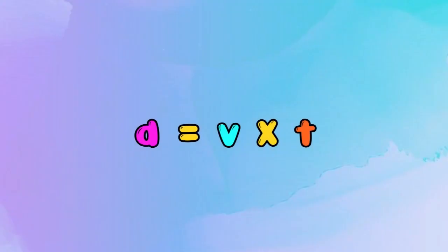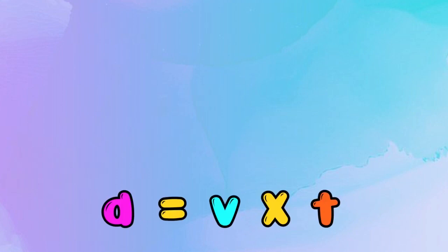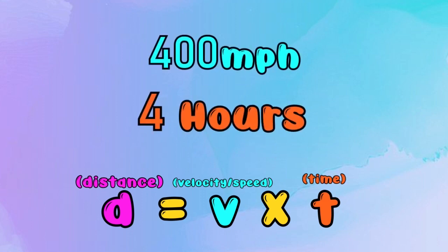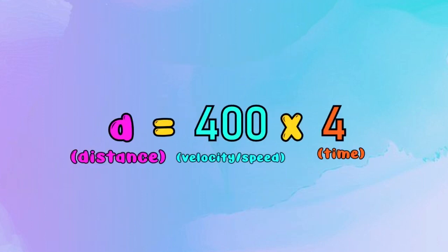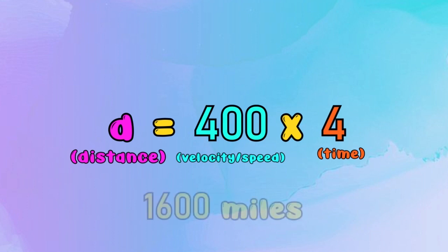Now, we will substitute D equals V times T. That is distance equals velocity or speed, multiplied by time. We substitute D equals 400 miles per hour multiplied by 4 hours. That gives us 1,600 miles.